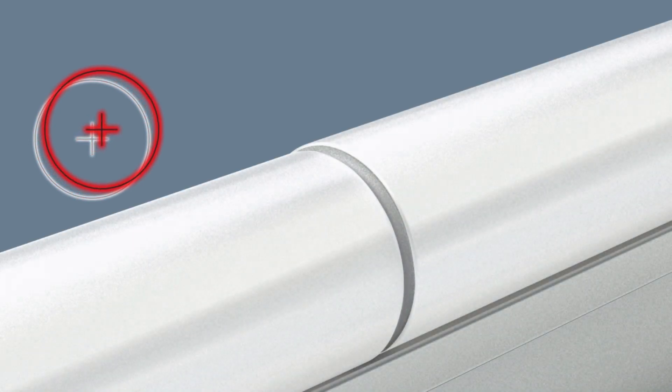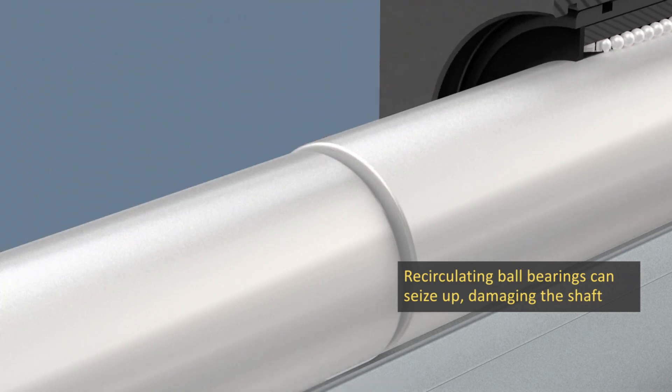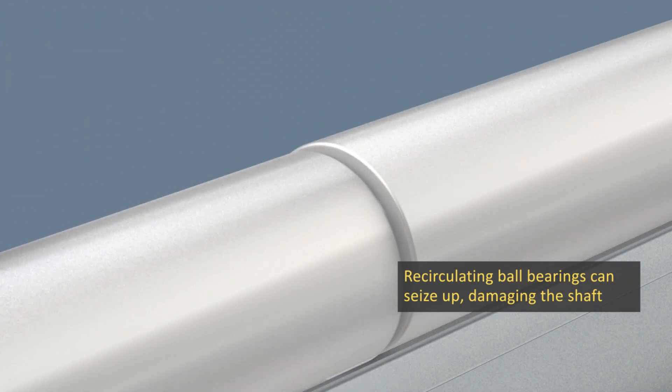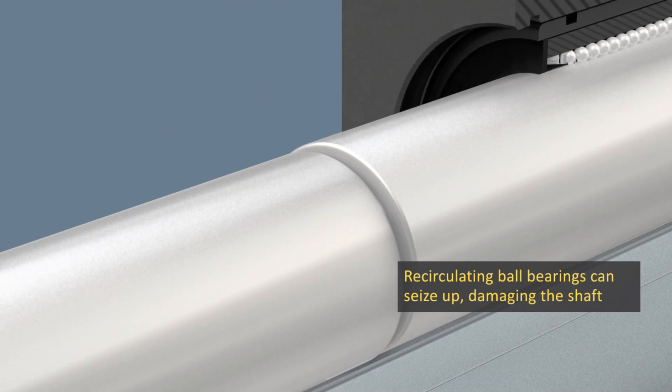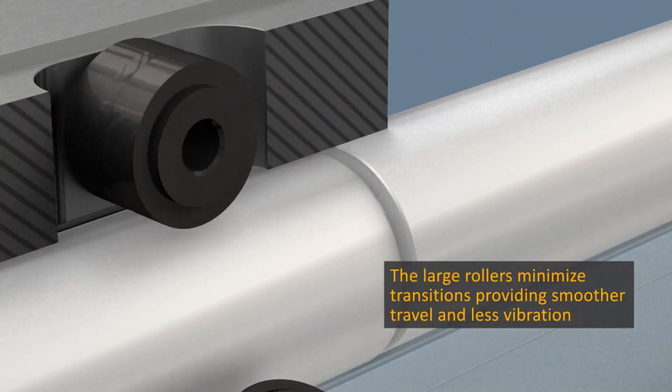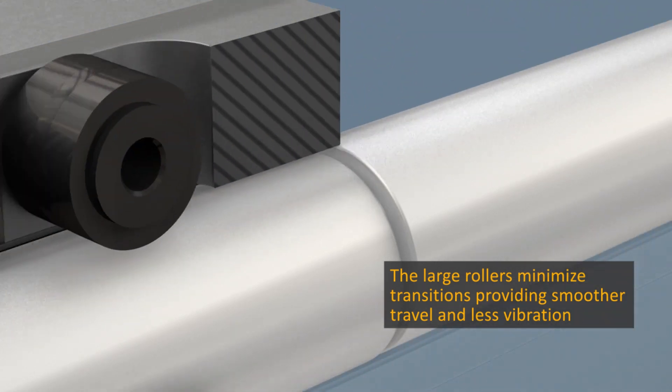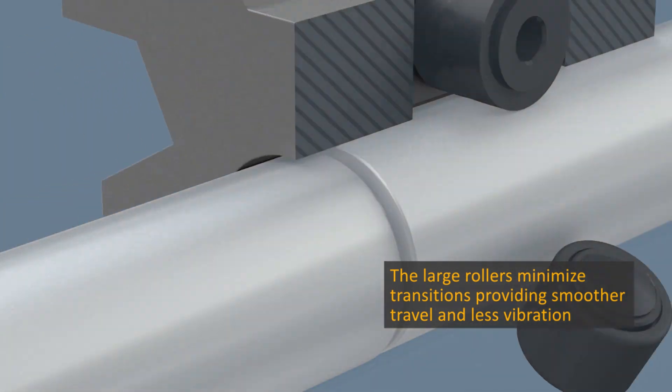The roller-bearings are also well suited to long travel applications, and the large diameter is again an advantage where shafting is joined together. Small diameter balls are very susceptible to damage at the joint, but the large roller-bearing pillow blocks minimize transitions while providing smooth travel, lowering vibration, and producing less noise.